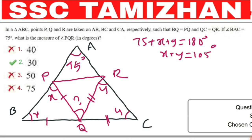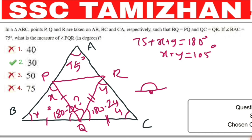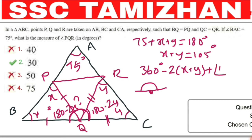Now look at triangle BPQ. Since BQ equals PQ, we have two equal sides, so the base angles are each x, giving the apex angle as 180 minus 2x. Similarly for triangle QCR, the apex angle is 180 minus 2y. The angles around point Q sum: 180 minus 2x plus 180 minus 2y plus angle PQR equals 360 degrees, so 360 minus 2x minus 2y equals 180 degrees.